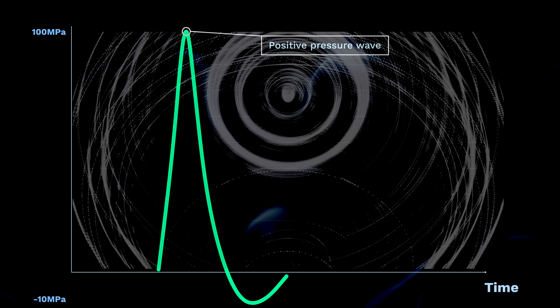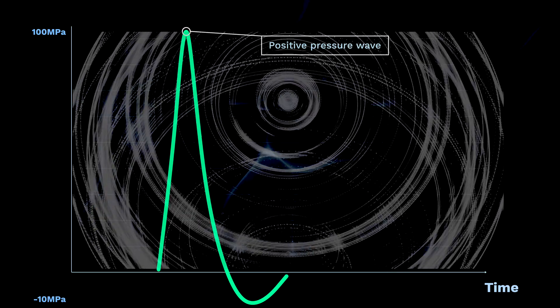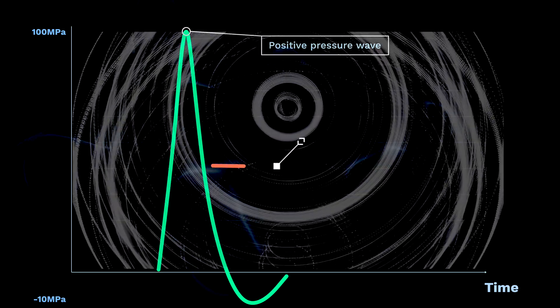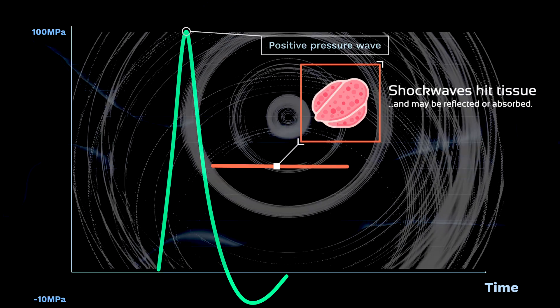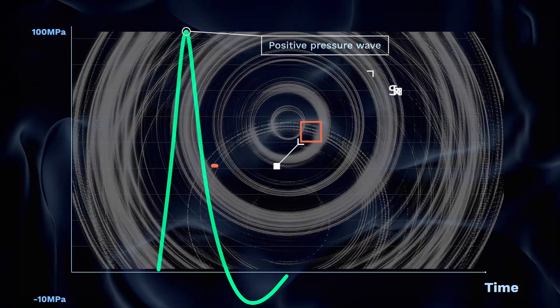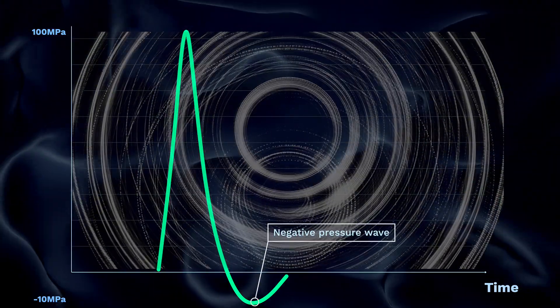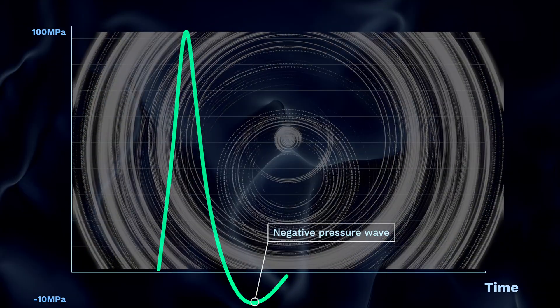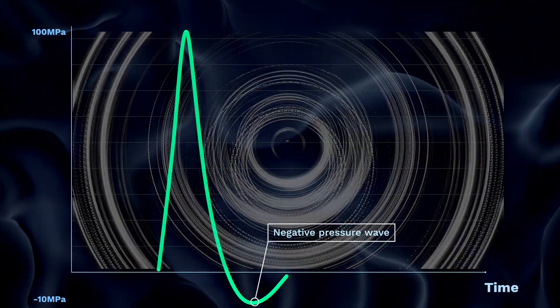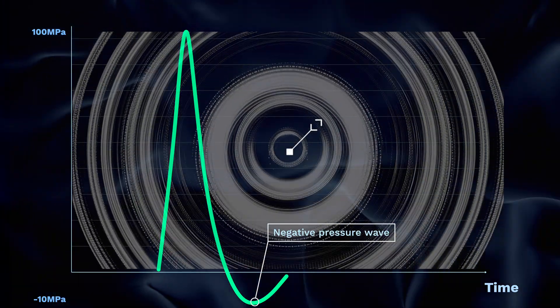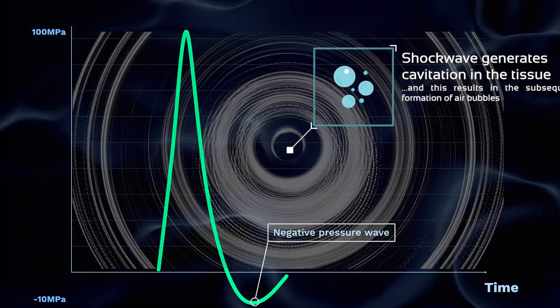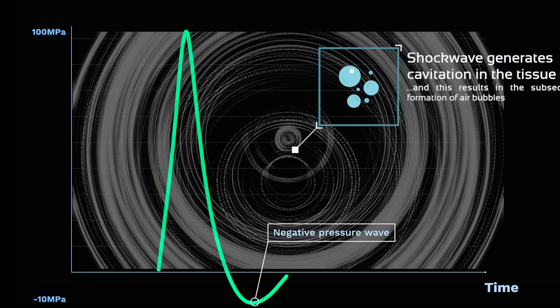In the positive phase, high pressure shockwaves may hit a tissue interface and be reflected, or they may pass through and gradually become absorbed. Then during the negative phase, which is also referred to as the tensile phase, the shockwave generates cavitation at the tissue interfaces, and this results in the subsequent formation of air bubbles. These air bubbles then implode with high speed, producing a second wave of shockwaves. The upshot of all of this is that this biphasic nature, in theory at least, underpins shockwaves' effects in tissues, promoting healing and regeneration.